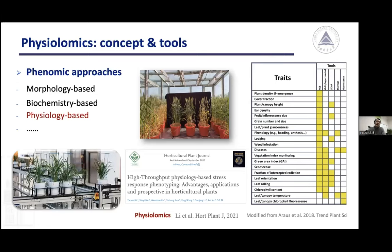In order to better phenotype plants, several phenomics approaches have been developed, including morphology-based phenomics, biochemistry-based phenomics. Morphology-based phenomics are the most widely used currently, and traits measured range from plant density and plant height to chlorophyll content and canopy temperature. Today, however, I'm going to focus on physiology-based phenomics. In one of our publications in 2021, we proposed the term 'physiologics' to refer to physiology-based phenomics.